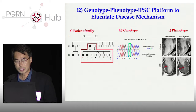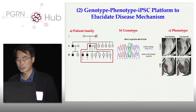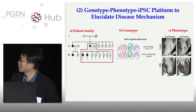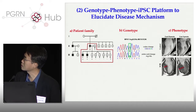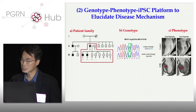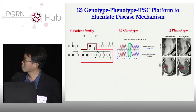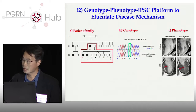This moves into the second part of my talk: how do we do genotype-phenotype. I emphasize the genotype-phenotype-iPSC platform, meaning that genotype alone often can't tell you what's going on with the phenotype. You need integration of these three platforms to elucidate disease mechanisms.